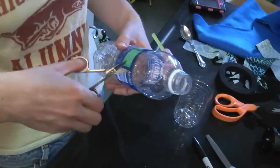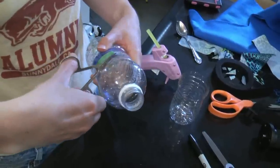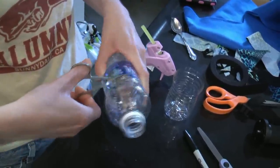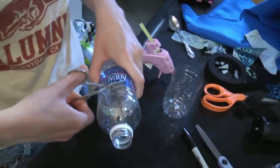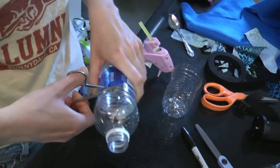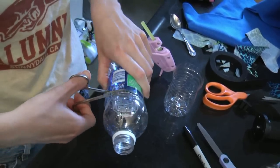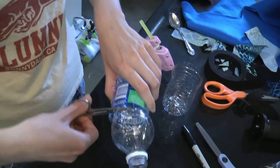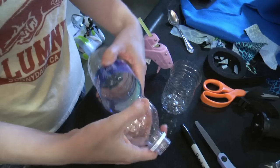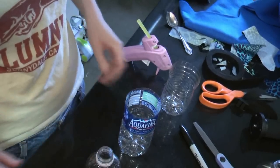The first step in making a hidden camera water bottle is cutting the bottle into basically thirds. You're going to want to cut it just above the label and then you're going to want to cut it just below the label so that you have a compartment which you can seal with the camera inside.